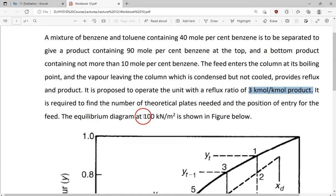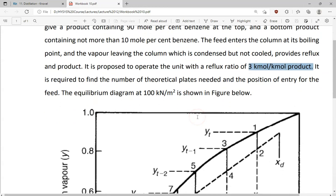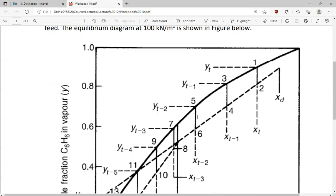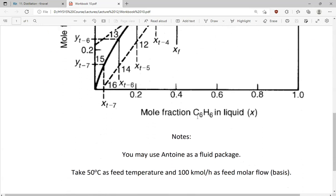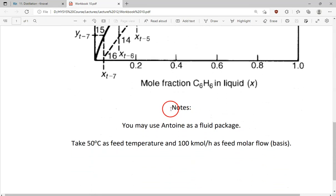The equilibrium diagram at 100 kN per meter squared, which is kPa, is shown in the figure below. In the notes it says that you may use Antoine as a fluid package, take 50 degrees Celsius as feed temperature, and 100 kilomole per hour as feed molar flow, which is our basis.